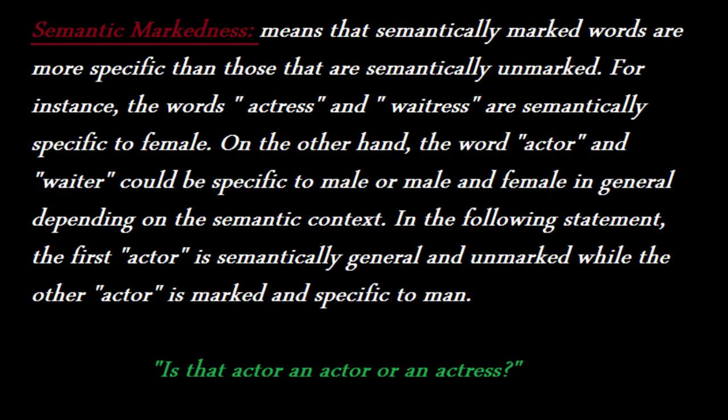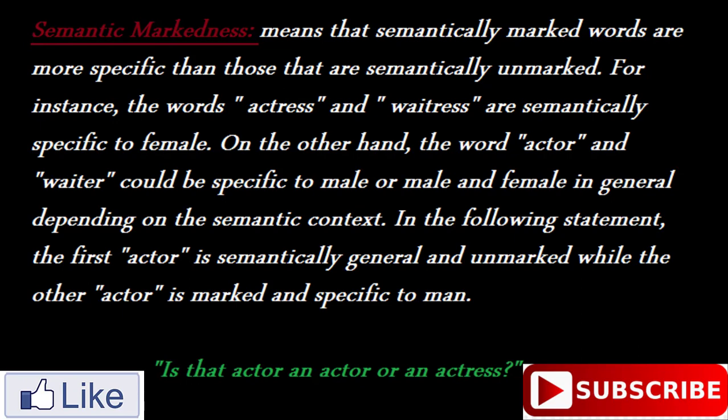Another type of markedness is called semantic markedness, which means that semantically marked words are more specific than those that are semantically unmarked. For instance, the words actress and waitress are semantically specific to female. On the other hand, the words actor and waiter could refer to male or female in general, depending on the semantic context. In the statement 'Is that actor an actor or an actress?', the first use of actor is semantically general and unmarked, while the second is marked and specific to men.